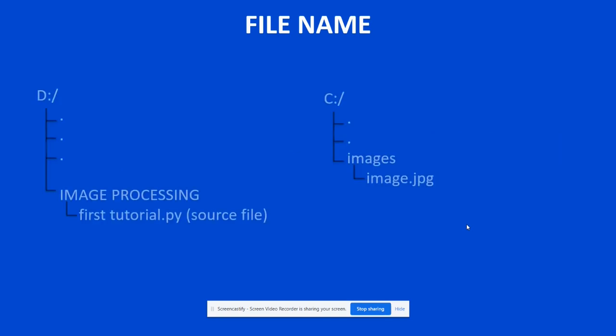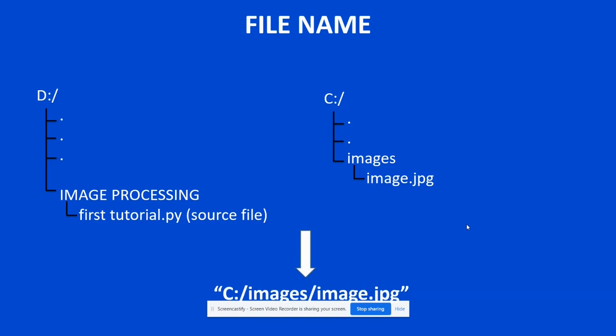In the third case, the source code and image are in completely different directories. In such cases, you must specify the entire absolute path, for example, 'C:/images/image.jpg'. Mentioning the full path works for all three cases, but it is compulsory only when the source code and image are in different directories.